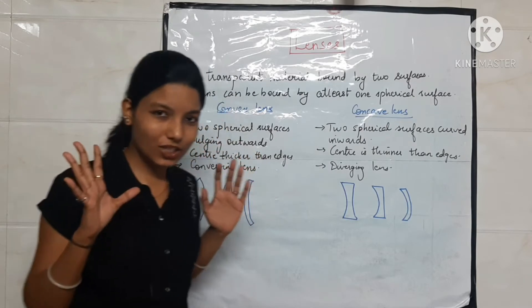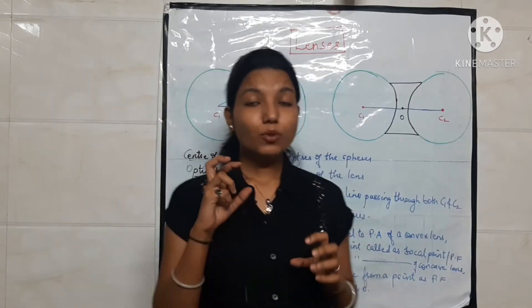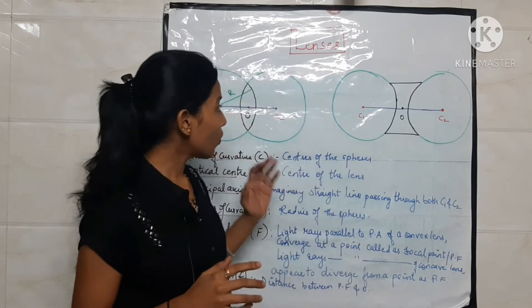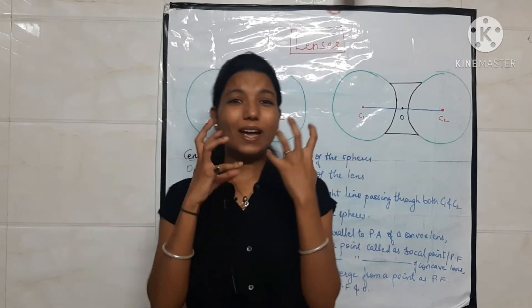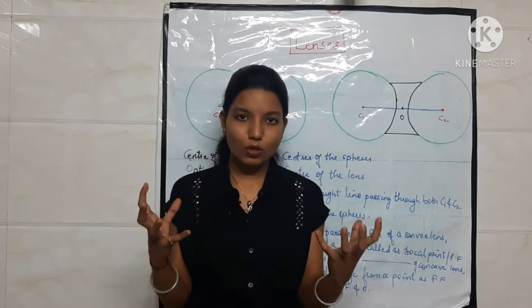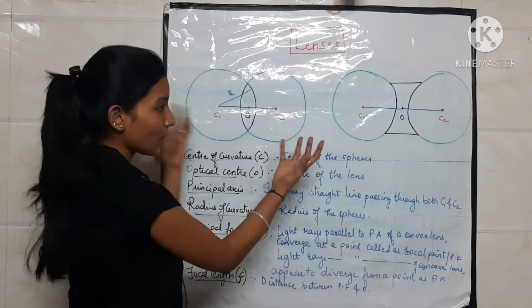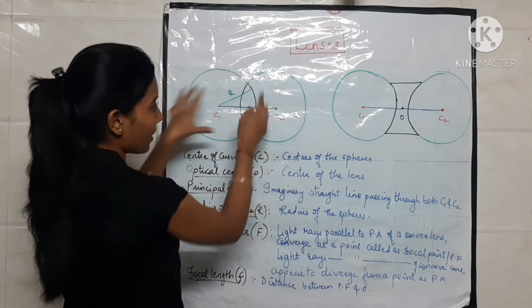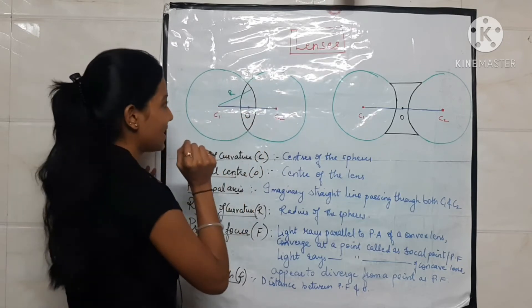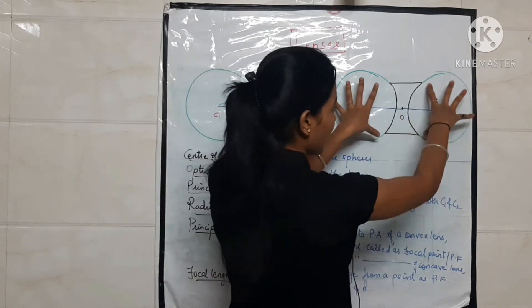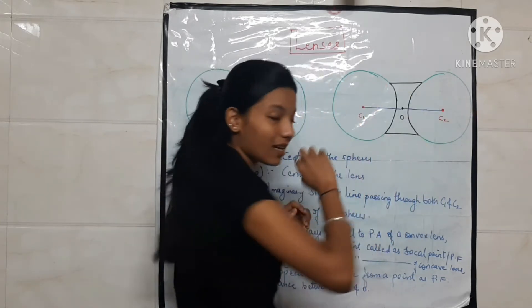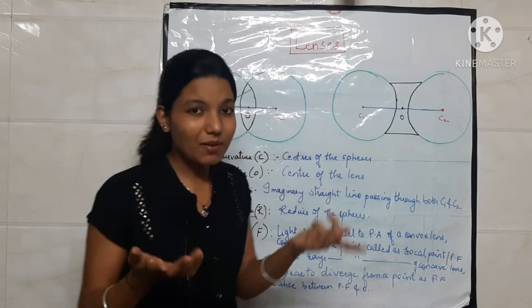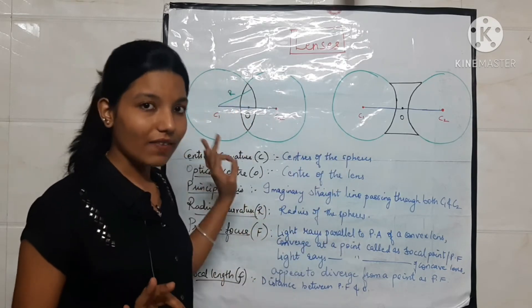Now we will see some notations which will be used in image formation and in the numericals of this chapter. First, see how a lens is formed. A lens is formed from two spheres. If we take two spheres and overlap them, the junction between them forms a convex lens. Similarly, if two spheres are placed far apart, the middle part becomes a concave lens. This is just to understand the construction — remember that lens is made from two spheres. Concave and convex lens are both made from two spheres.